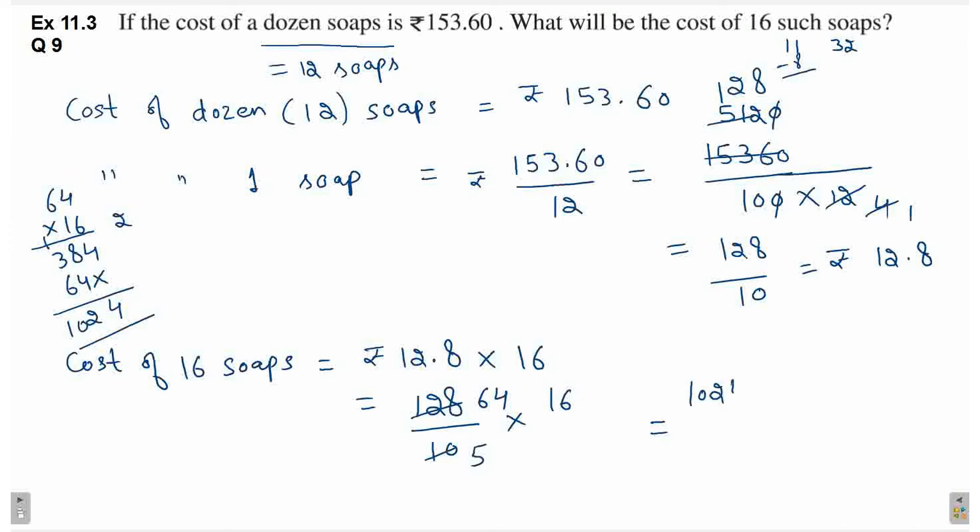1024 divided by 5. This is equal to 5, 2s are 10. Phir ayega 0. 5, 4s are 20. 4 bache, 7 mein aaya 0. 5, 8s are 40. Rupees 204.8.